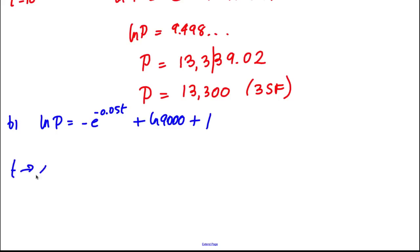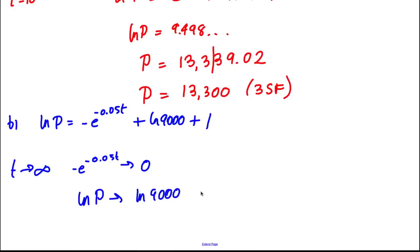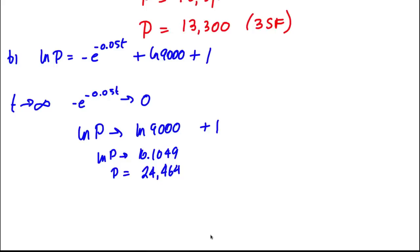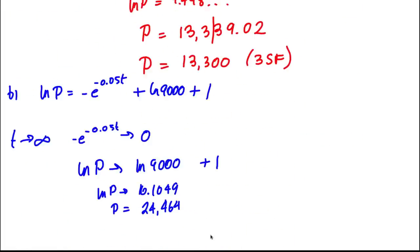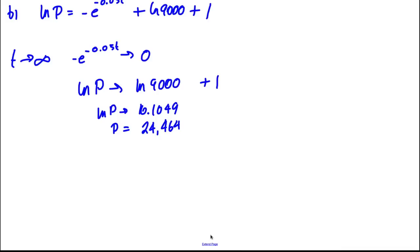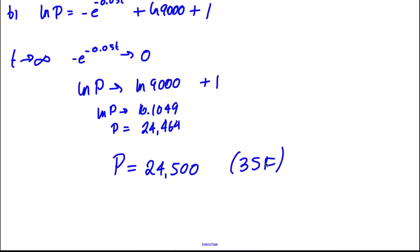As T tends to infinity, negative e to the negative 0.05T tends to 0. So ln P will tend to ln 9000 plus 1. That gives ln P tending to 10.1049, meaning P is going to equal 24,464. To three significant figures, that would be 24,500. That's what the model is telling us the population will approach eventually.